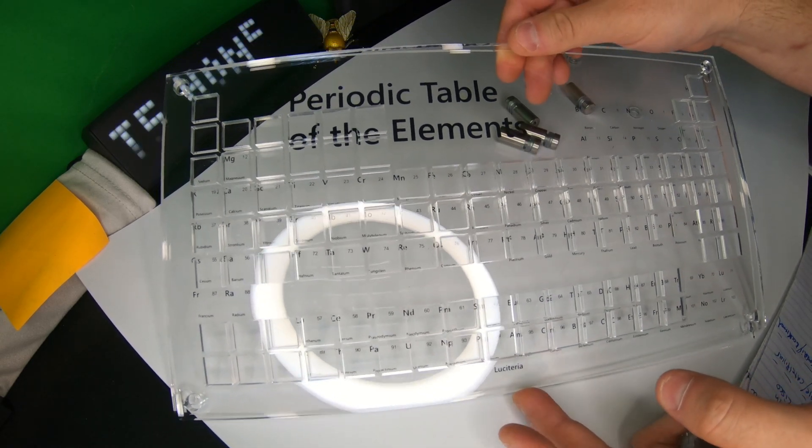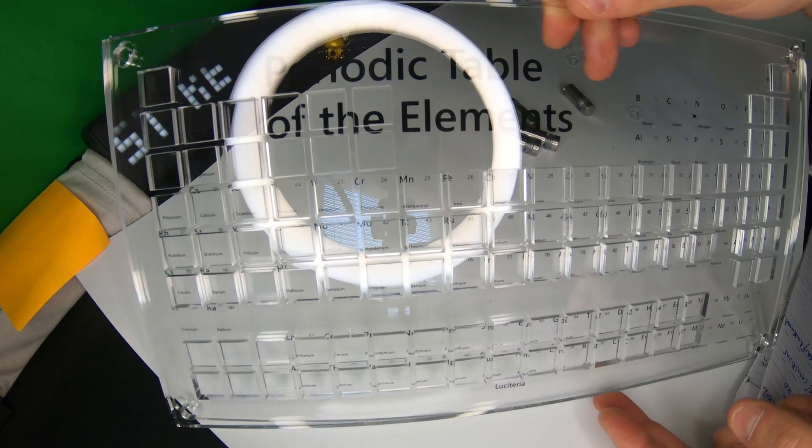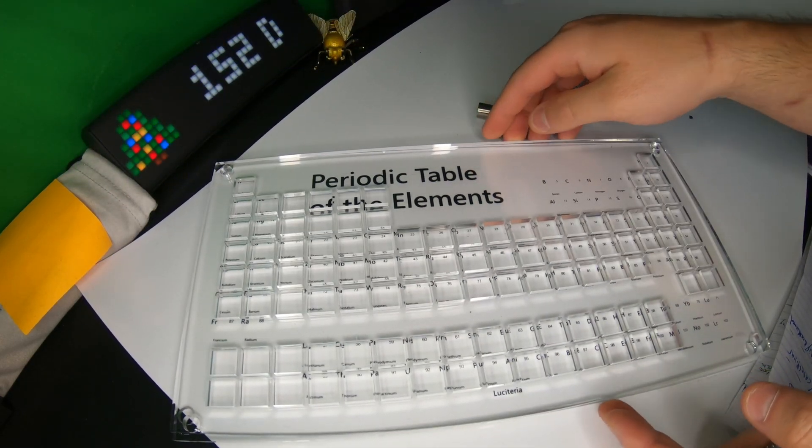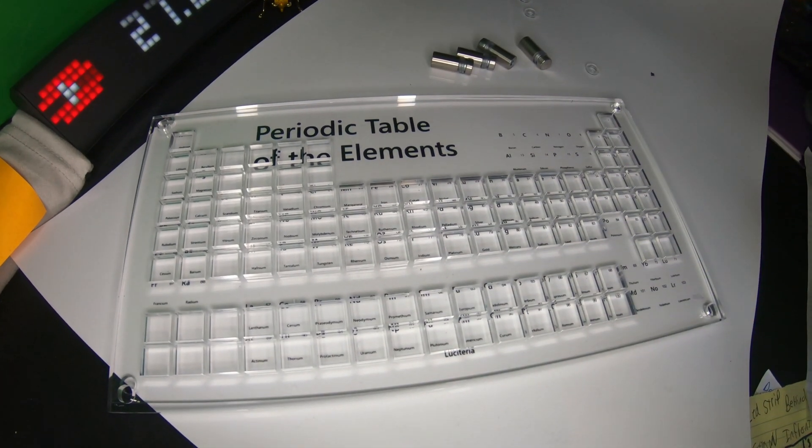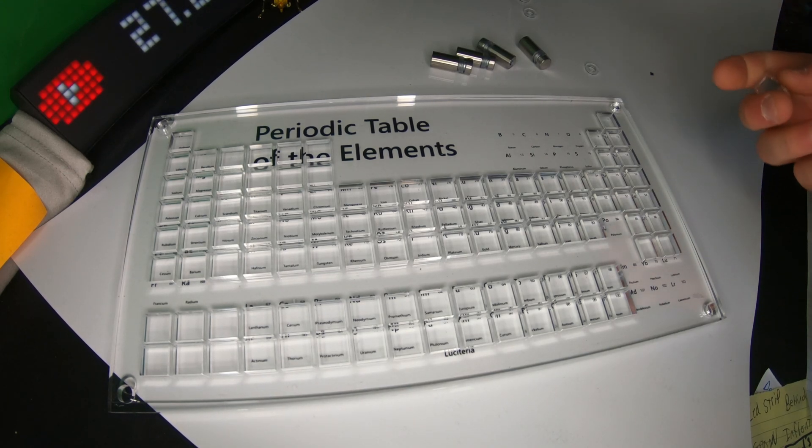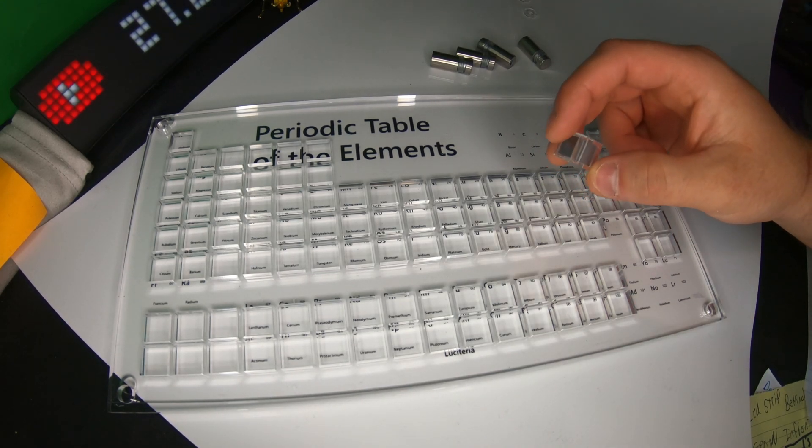So I found something really exciting for you and that is periodic table of elements. You can buy these 10 mm cubes of different elements that belong to the periodic table. There's a ton of different elements, there's gases, there's rare earth metals.